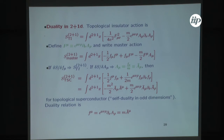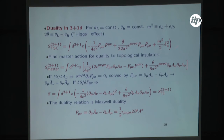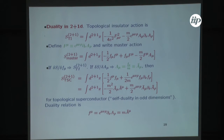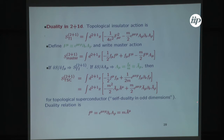We define this field and write this master action in terms of it. If I vary by the little f I get the original action. If I vary with respect to A_mu I get that A_mu is little f_mu over m, which I can call A-tilde_mu. Then I get the dual action that has the form of a topological superconductor: there is a Chern-Simons term and then this term with a mass — the mass for the gauge field coming from the Higgs effect or superconducting effect. This topological superconductor action was already known as the self-dual action in odd dimensions.